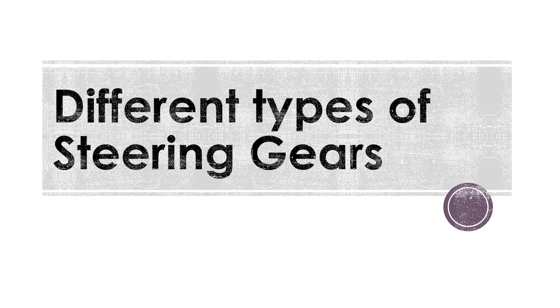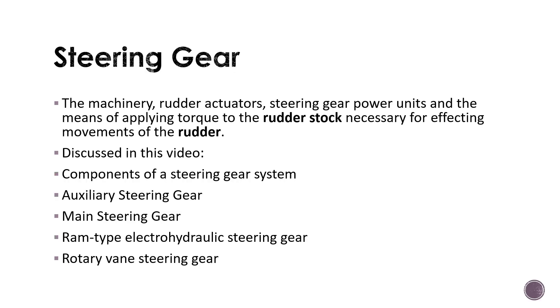In today's video I'm going to talk about the different types of steering gear systems found on board ships. The steering gear system basically comprises the machinery, rudder actuators, steering gear power units, and the means of applying torque to the rudder stock, which is necessary for affecting the movement of the rudder that steers the ship in the desired direction.